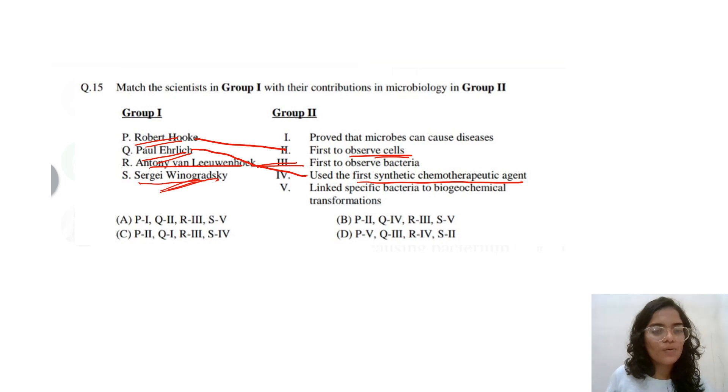And Sergei Winogradsky. What about Sergei Winogradsky? Nitrification process and nitrogen fixation. So, he is the one who linked specific bacteria to biogeochemical transformations. This is related to our nitrifying process. So, the answers will be 2, 4, 3 and 5. Option B.